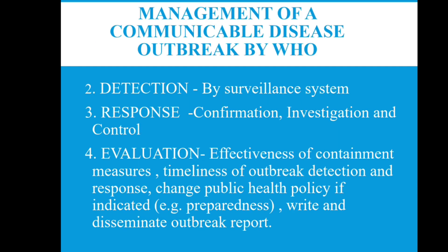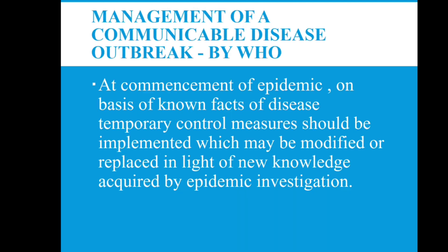The second phase is detection — by surveillance we can detect the disease outbreak. Third is response: confirmation, investigation and control. Fourth is evaluation to see the effectiveness of containment measures — assessing whether the control measures taken are effective. This includes timeliness of outbreak detection and response, changes to public health policy if indicated, and writing and disseminating the outbreak report.